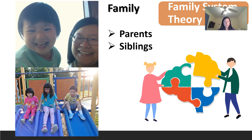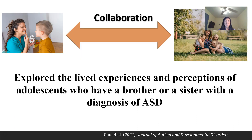According to family systems theory, the family is a whole system affected by the relationships between family members — such that the relationship between siblings can impact the entire family system. We therefore also conducted research looking into the lived experiences and perceptions of adolescents who have a brother or sister with a diagnosis of autism spectrum disorder.